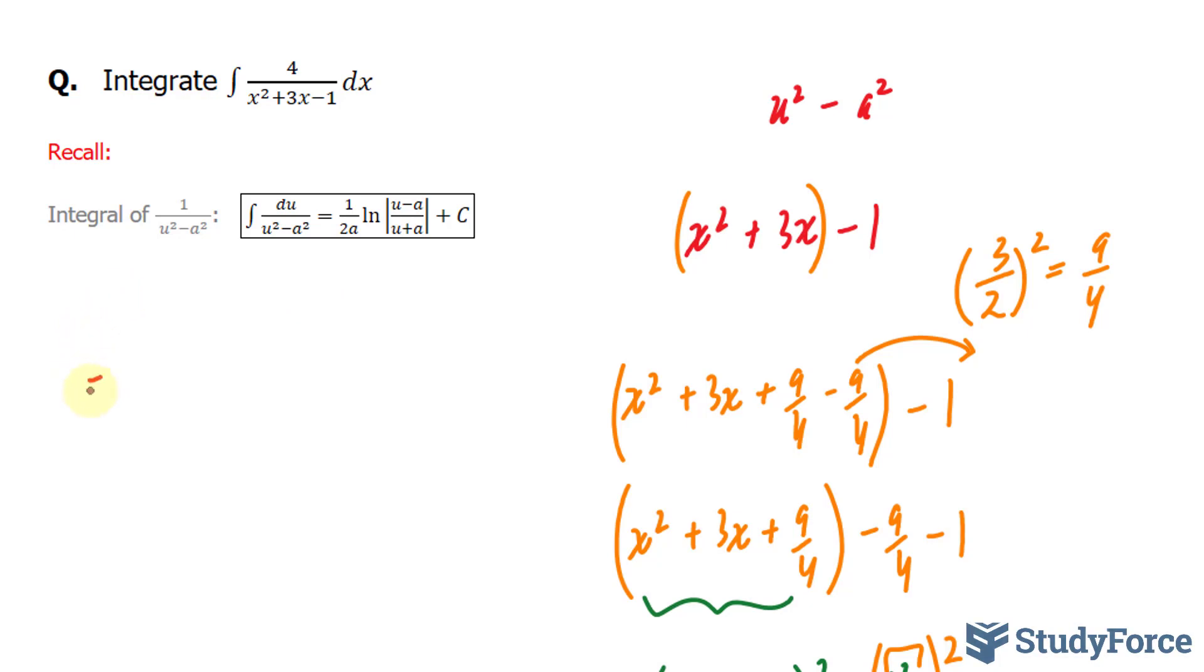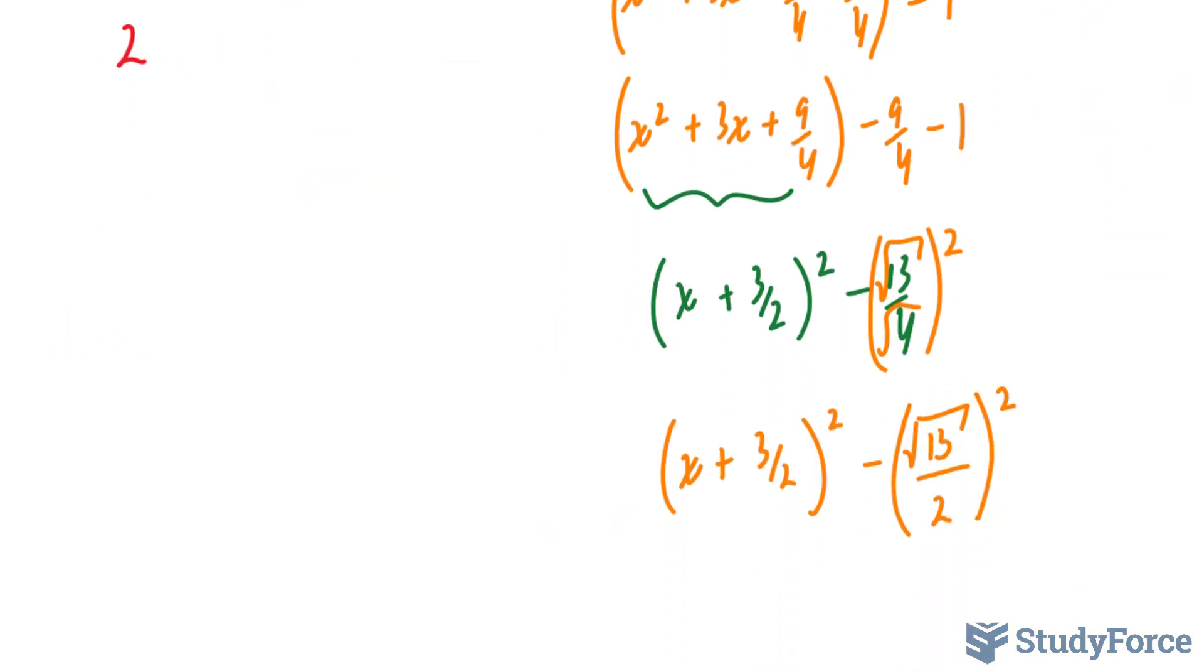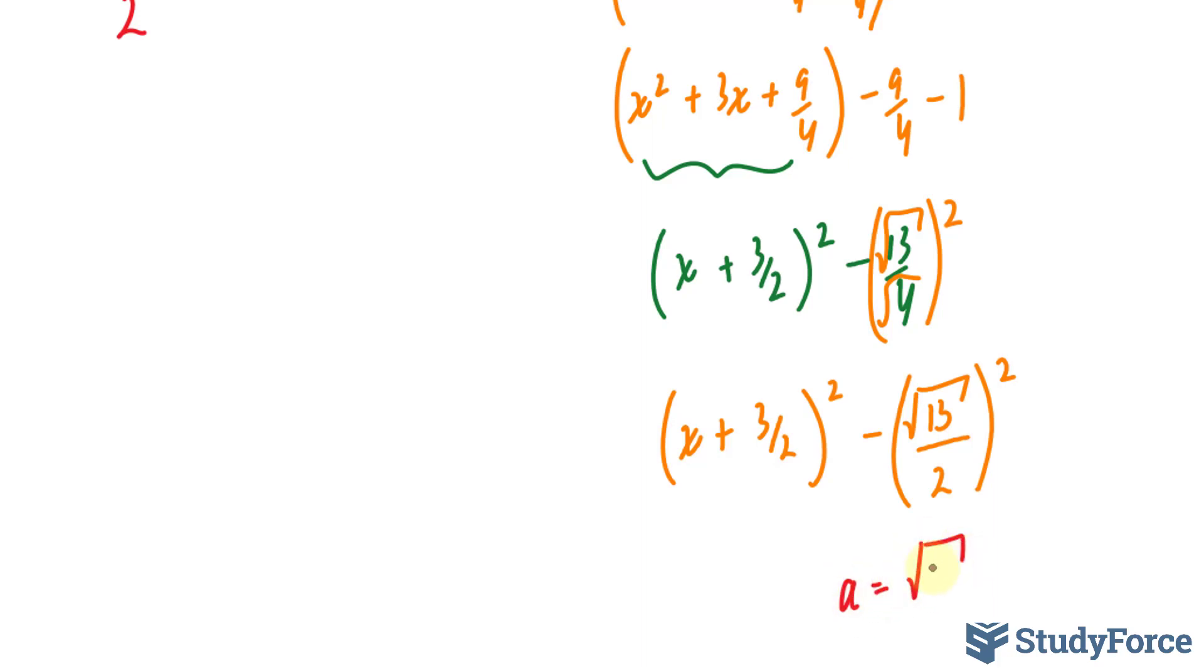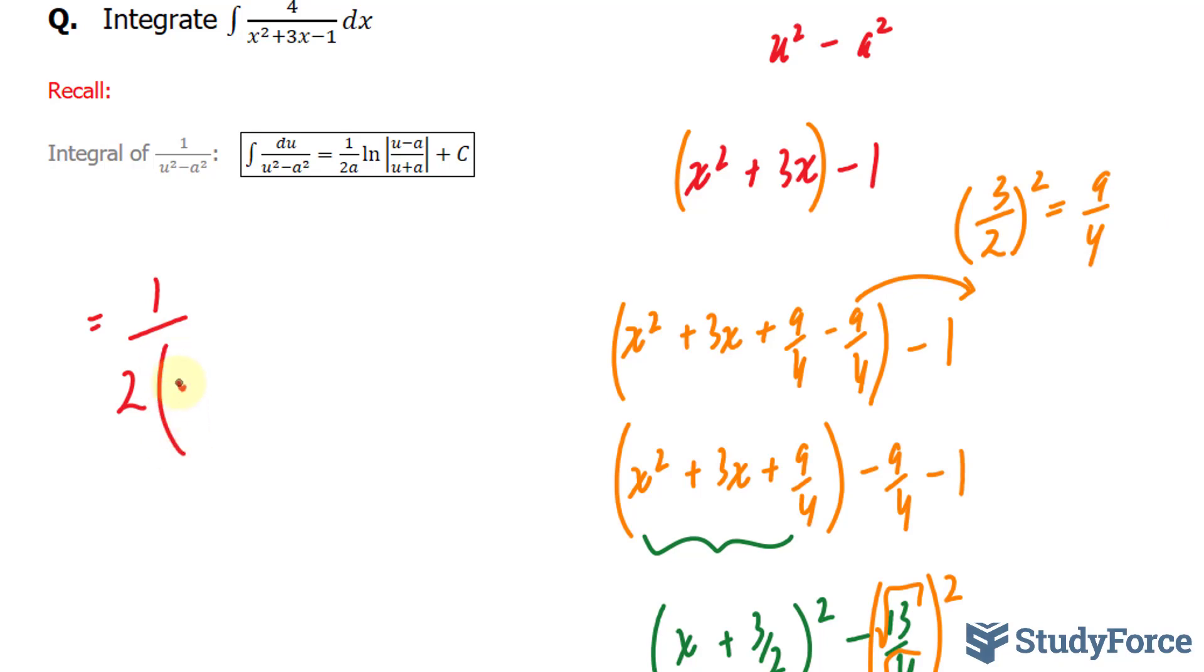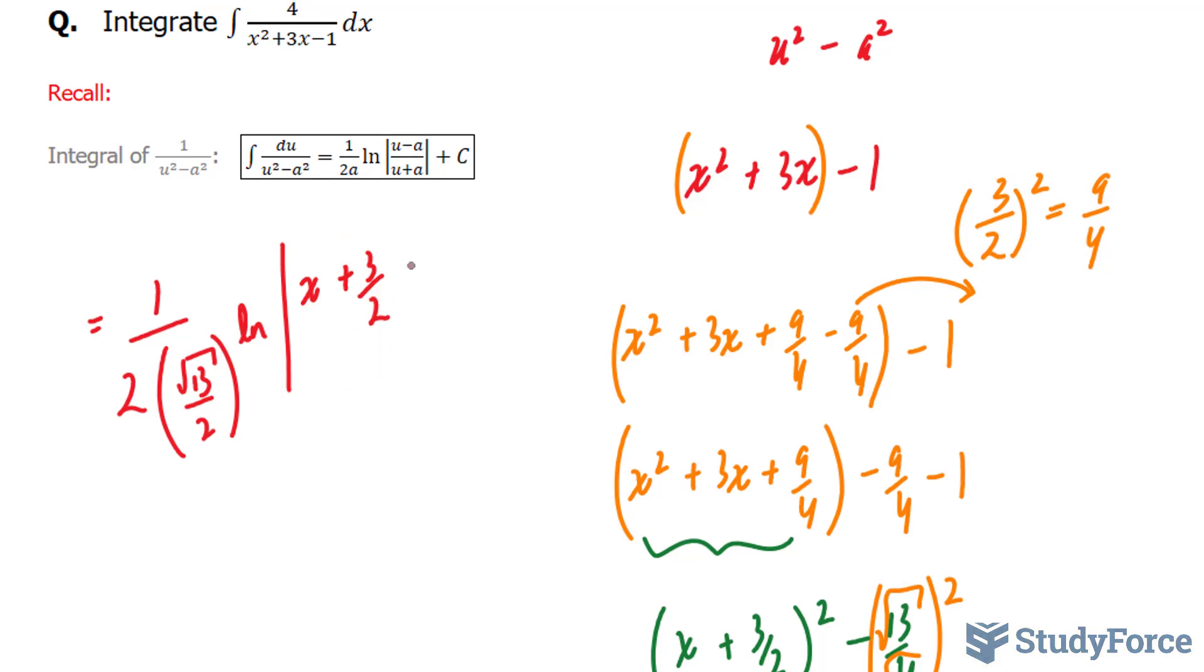We have 1 over 2 times a. Our a value here is the square root of 13 over 2. The square root of 13 over 2 times ln absolute. x plus 3 over 2 minus our a value, which was the square root of 13 over 2, all over x plus 3 over 2. And now we add our a value.